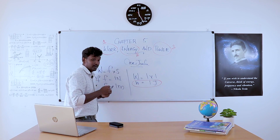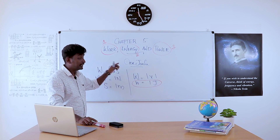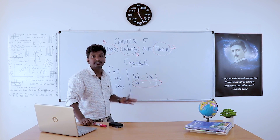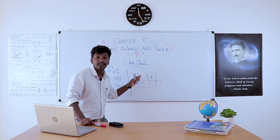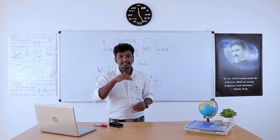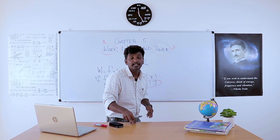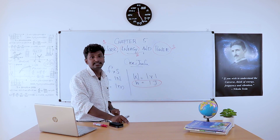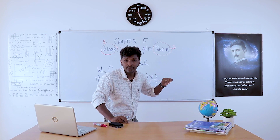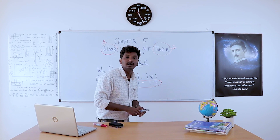We get one Joule of work when we apply one Newton force and the object makes a displacement of one meter. So one Joule of work is defined as: work is said to be one Joule when one Newton force applied to a body displaces the body through one meter distance. That is one Joule of work.